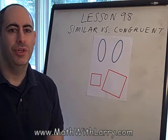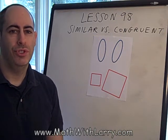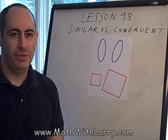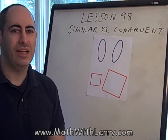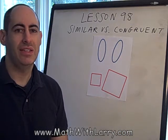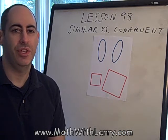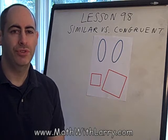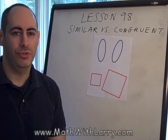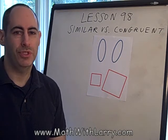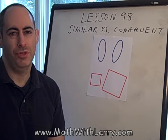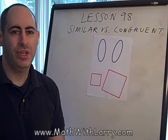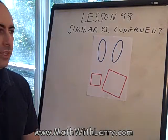In geometry, very often we deal with figures that are exactly the same — exactly the same size and exactly the same shape. We call those figures congruent, or some people say congruent. Either pronunciation is fine. Let's take a look at an example here.